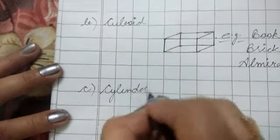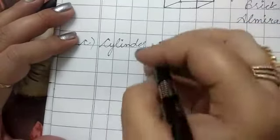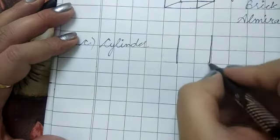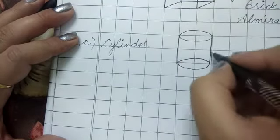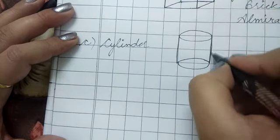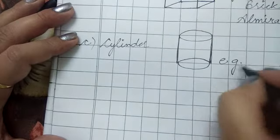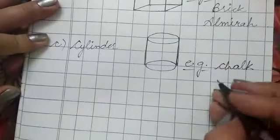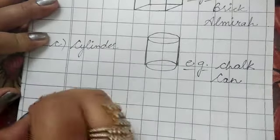C, cylinder. For example, chalk, our cold drink can.